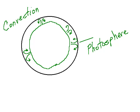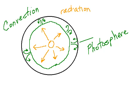Beneath this region is another zone, which I'm just going to draw in the center part of the Sun. This region, where the arrows are, is called the radiation zone. The radiation zone is where energy is radiated — sent out through the Sun through electromagnetic radiation.